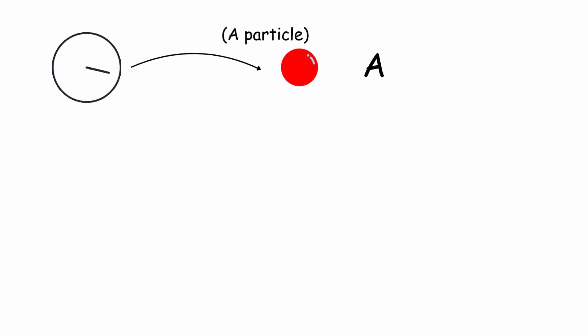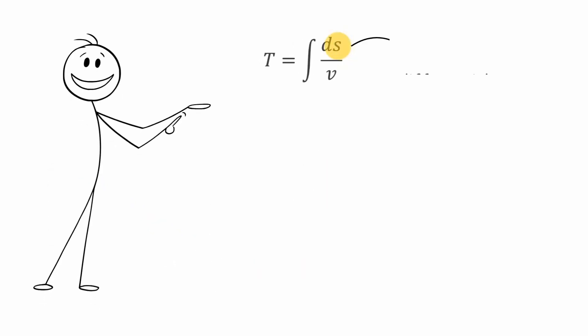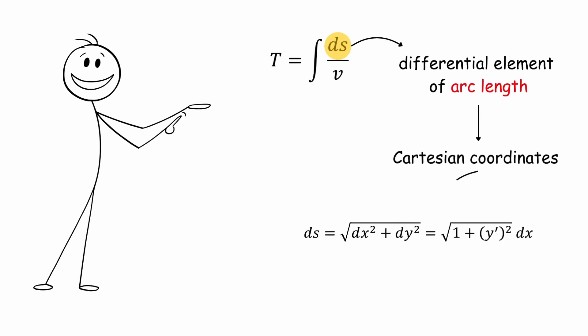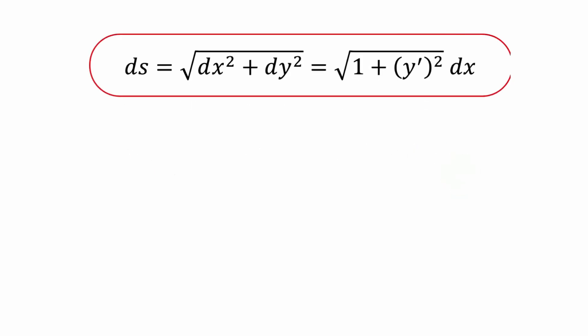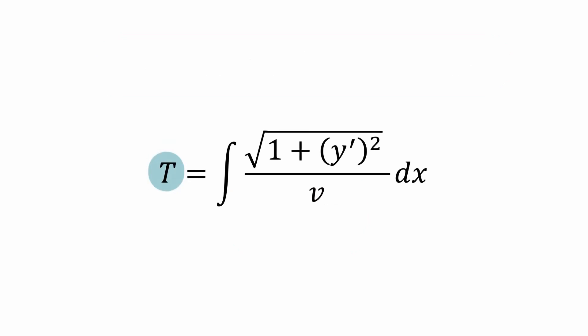The time it takes for a particle to move from A to B under the action of gravity is given by the following integral: The time t equals the integral of the arc differential ds divided by the velocity v, where ds is a differential element of the curve and v is the velocity of the particle. It is known that a differential element of arc length in Cartesian coordinates is given by ds equals square root of (dx² + dy²) equals square root of (1 + y'²) dx. Substituting this into the time t equation: t equals integral of square root of (1 + y'²) over v with respect to dx.